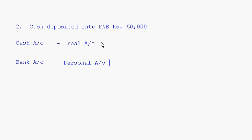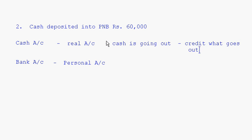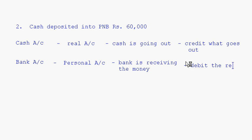When we deposit cash into the bank, cash is going out of the business — I am taking out cash from the business and putting it into the bank. So we apply 'credit what goes out.' As for bank, it is treated as a person here and bank is receiving the money from the business. So for personal account, debit the receiver — bank account will be debited.